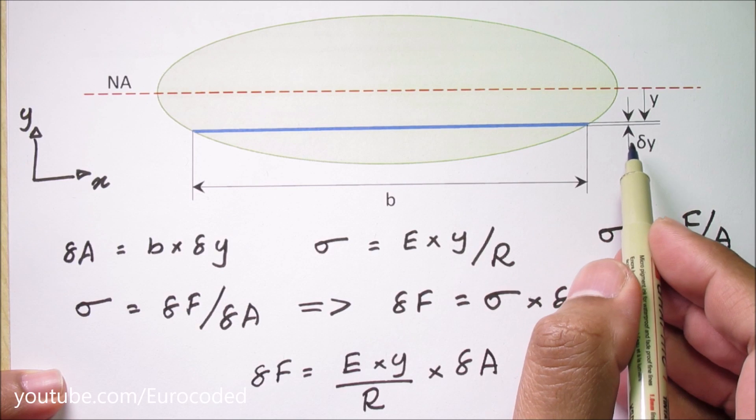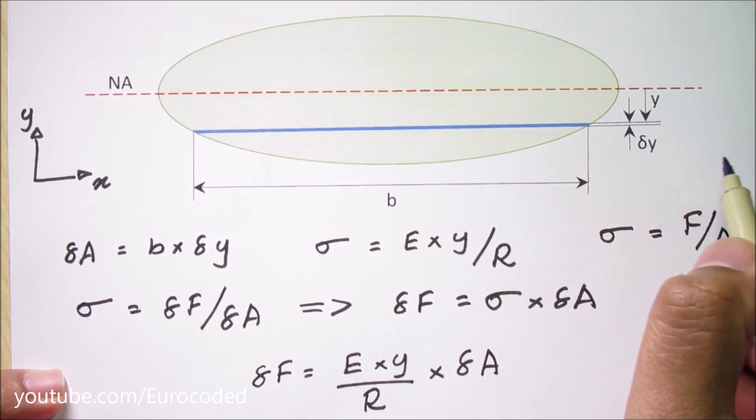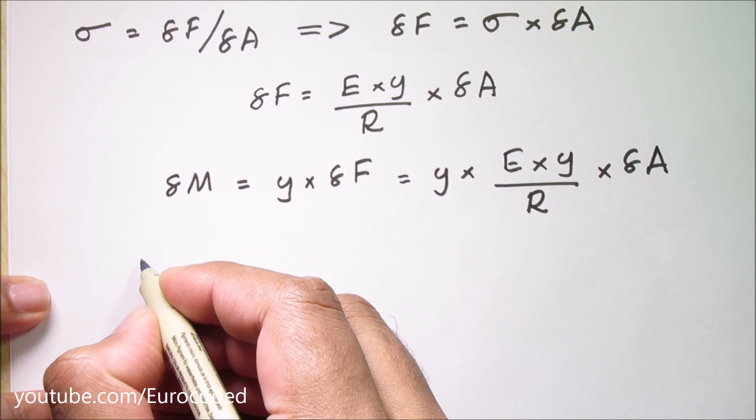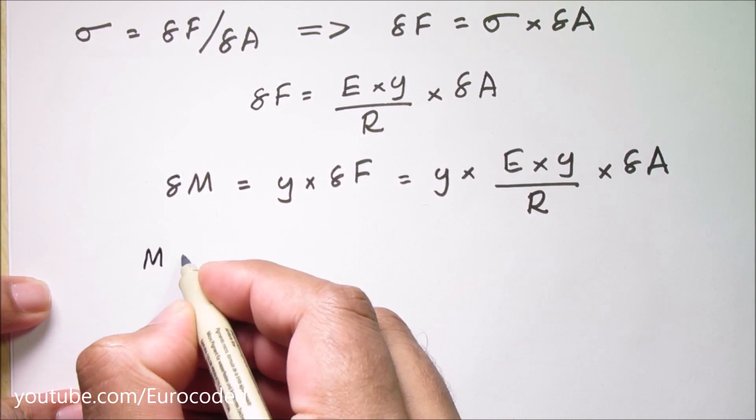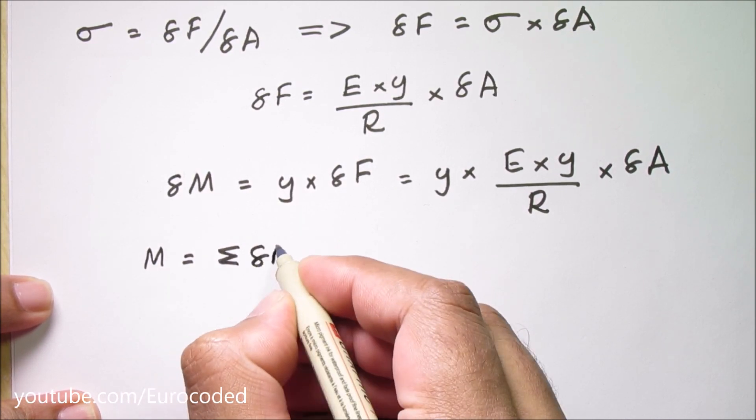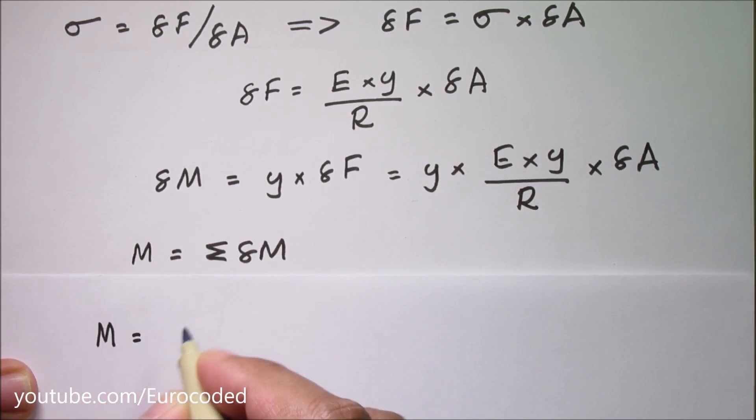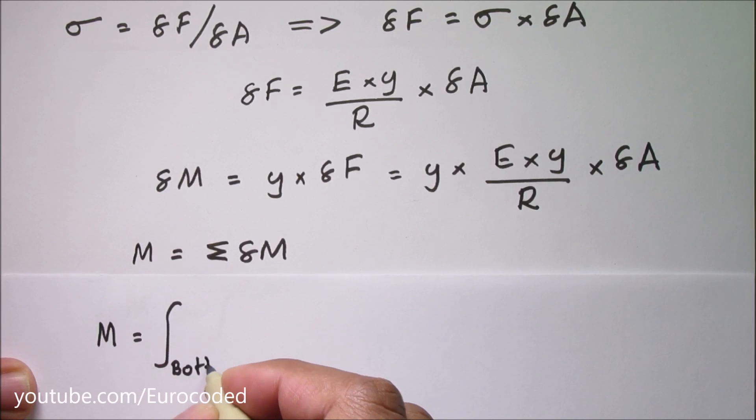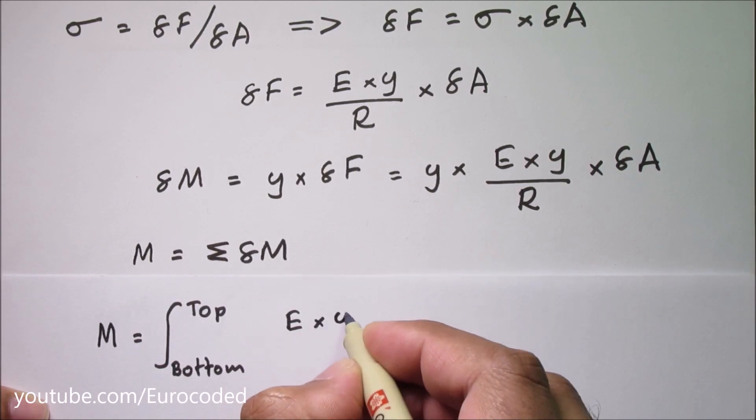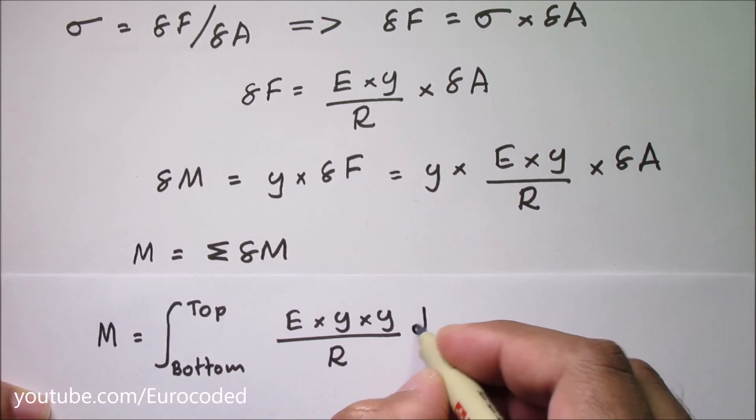In the limit state when delta y tends to zero the number of strips in our section tends to infinity. Therefore we can write the total bending moment M is equal to summation of all the delta M values. We can rewrite this as M is equal to integral from bottom to top of E times y times y over r dA.